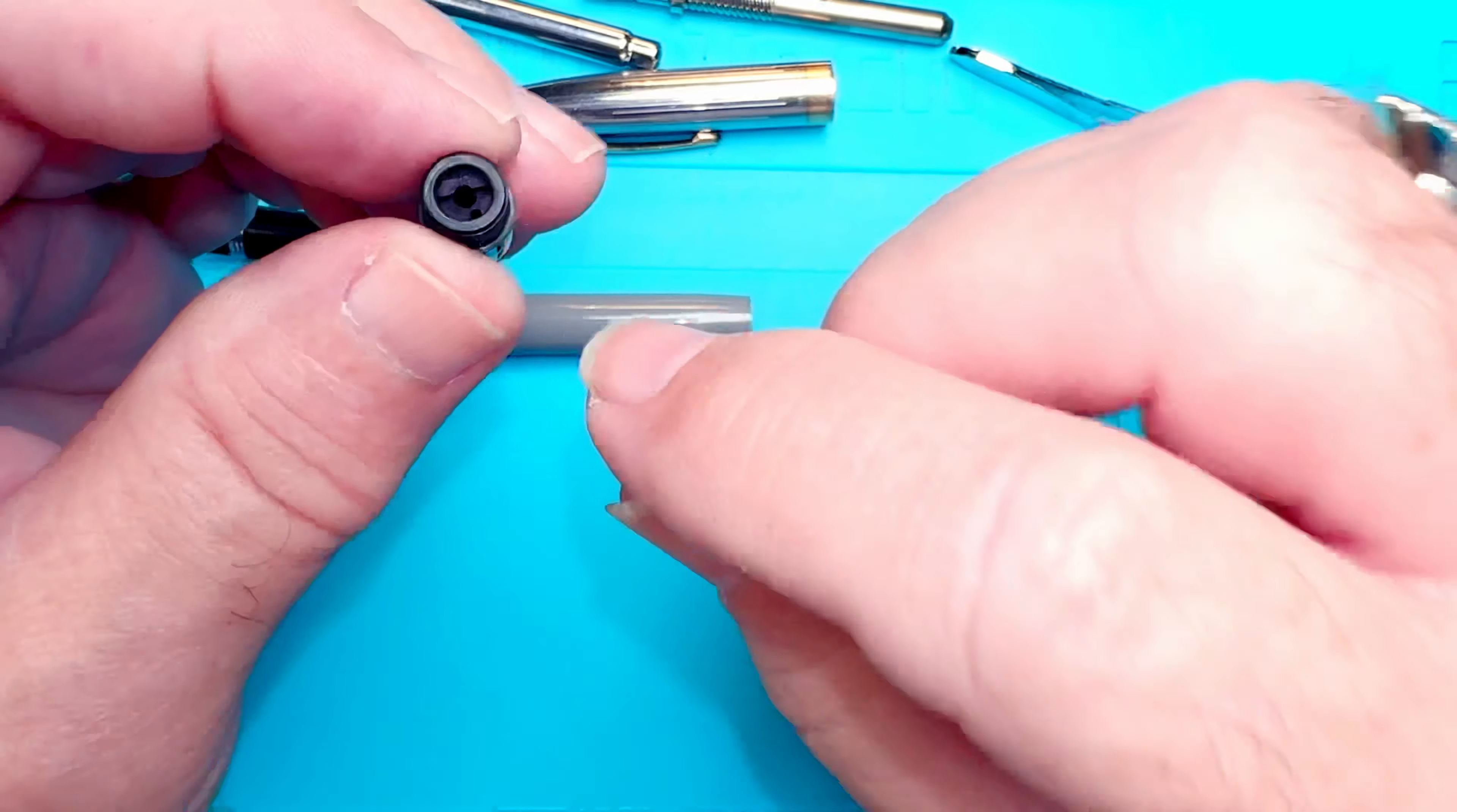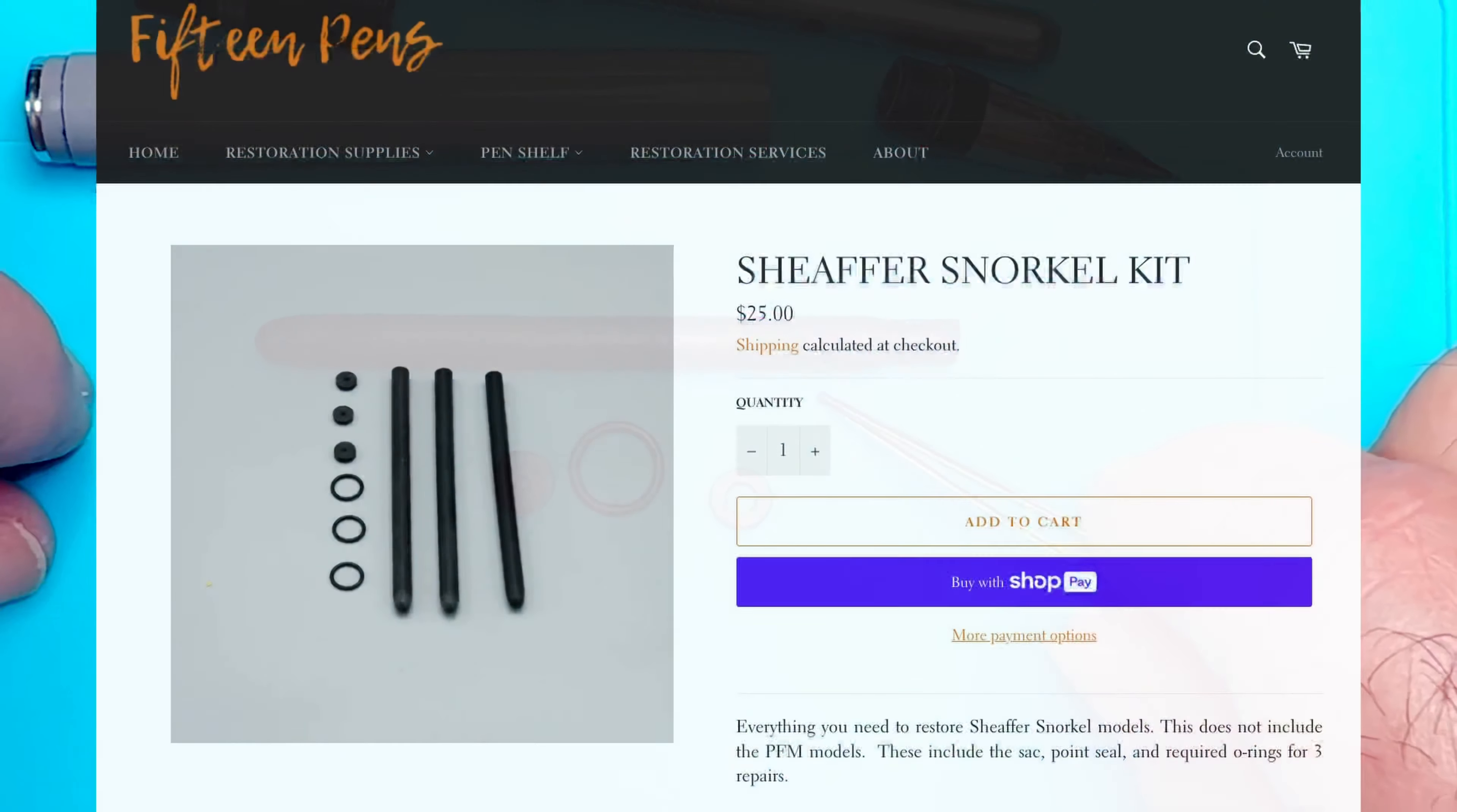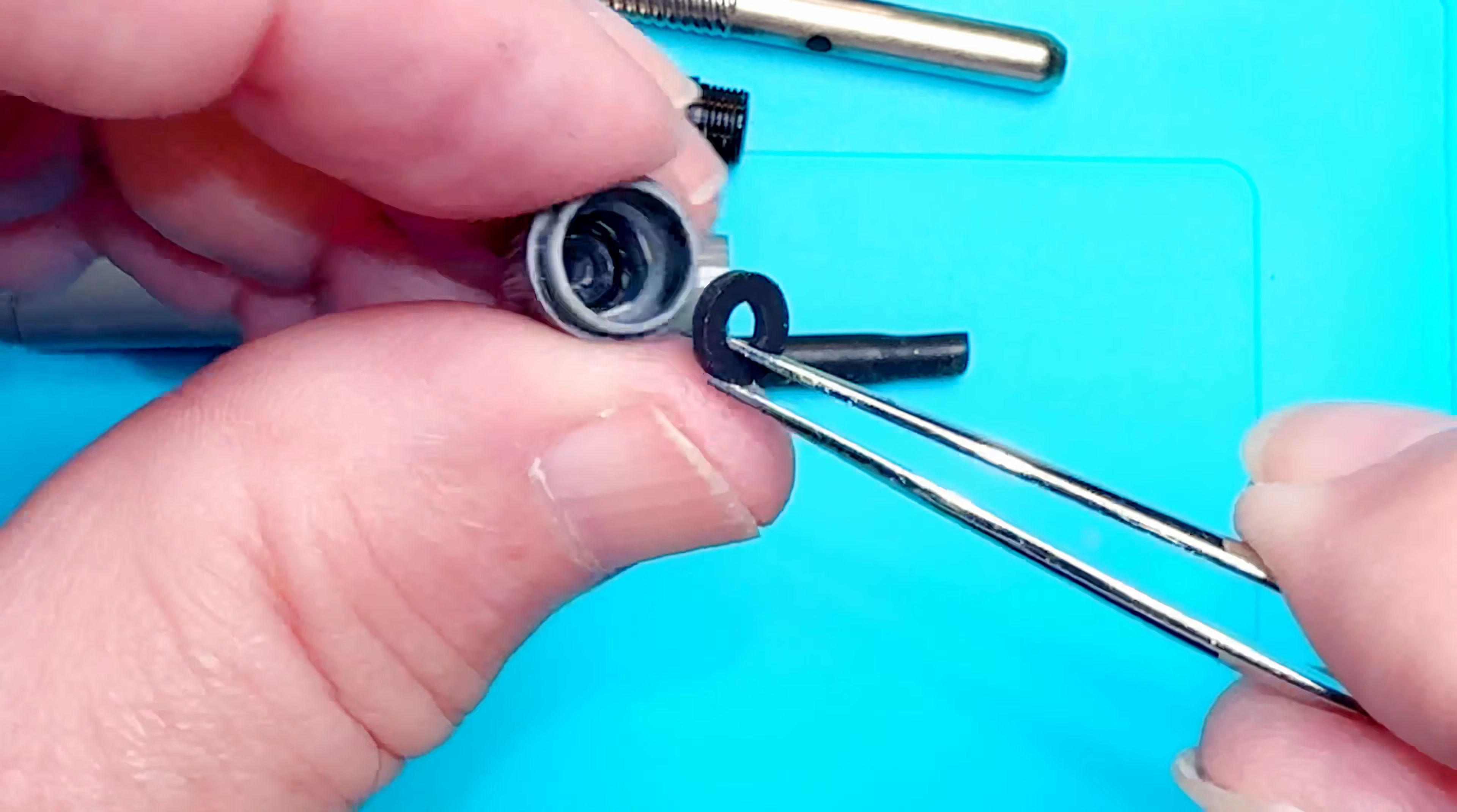Without any soaking or anything, I was able to unscrew the nib unit. There is a point seal right there. So there's the old point seal. It's hard as a rock. That's a rubber seal that needs to be replaced. That new one goes right inside that nib unit. And then there's the sack itself inside the sack protector. So lots of parts here. I have a Schaefer parts kit for a Schaefer snorkel.